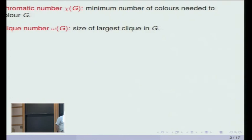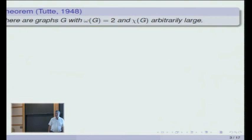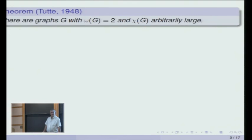But there really isn't. You can have graphs with clique number two and chromatic number as large as you want. It's not true, but on the other hand it would be nice if it were, and people put some effort into repairing it.